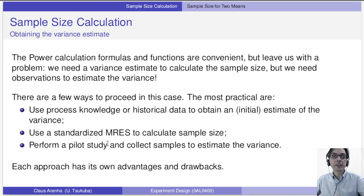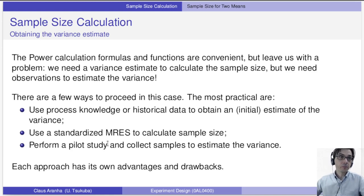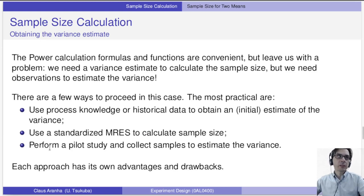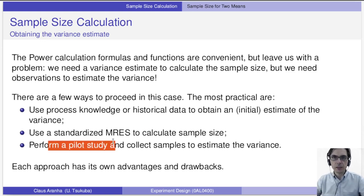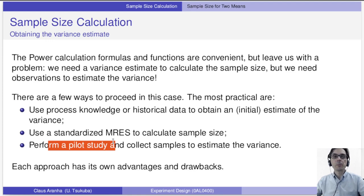There are a few options. First, we can use knowledge about the process — for example, looking at the literature to see what variance was observed in the past. Second, we can use an estimator to calculate the sample size. Third, we can use a pilot study — an initial study whose objective is just to estimate the variance by observing the effect we're trying to measure. Each of these approaches has its own advantages and drawbacks.